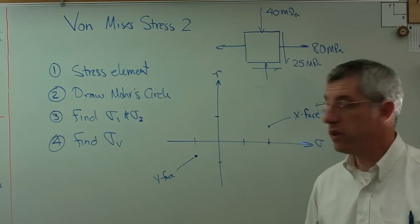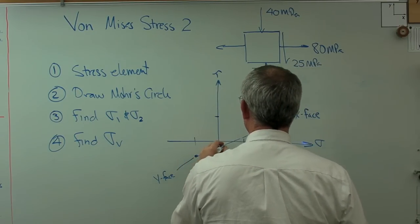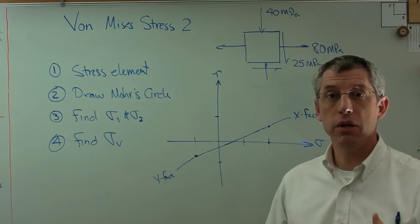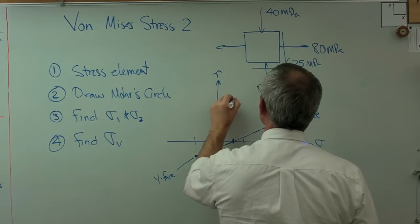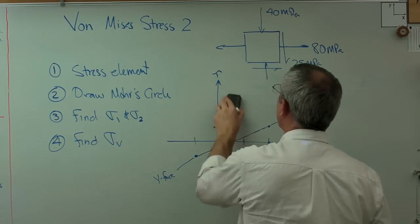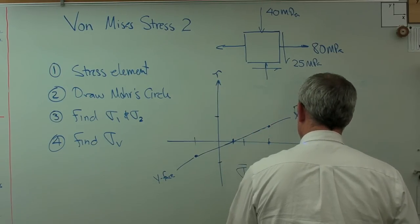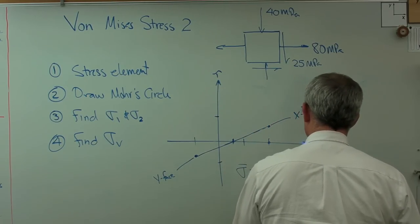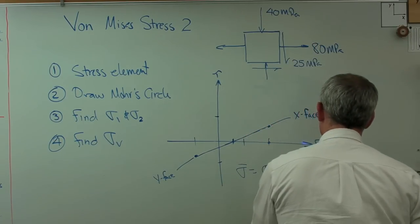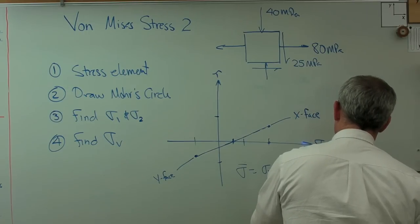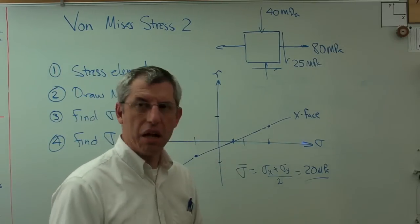All right, so we've got two points and I've got to draw a line between those two points. And that line is the diameter of a circle. And that point right there where we cross is sigma bar. Sigma bar is sigma x plus sigma y over 2. So, that's 80 minus 40 divided by 2. So, that's going to be 20 megapascals. And that looks about right. I got that at about 20, at least to the scale I'm using here anyway.